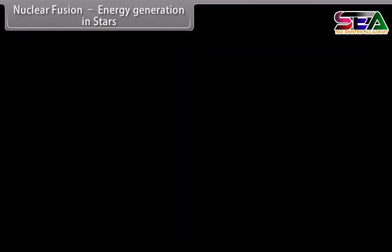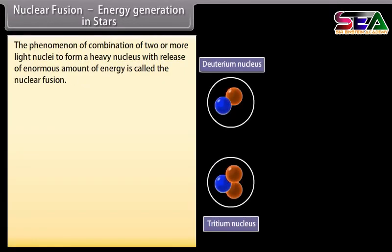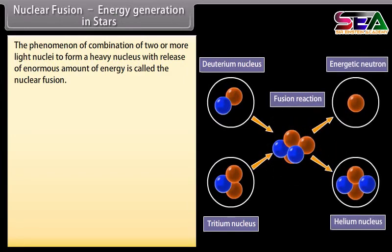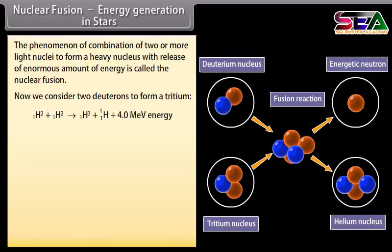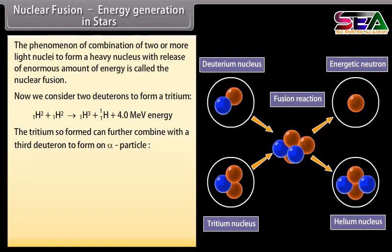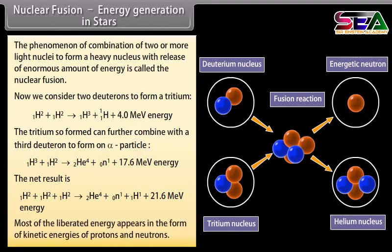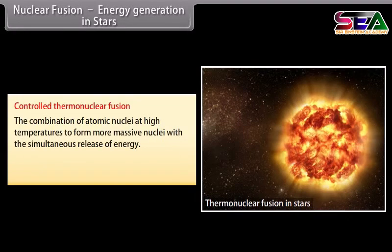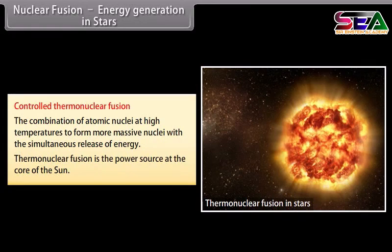Nuclear fusion — energy generation in stars: The combination of two or more light nuclei to form a heavy nucleus with release of enormous energy is called nuclear fusion. Two deuterons can form tritium, which can further combine with a third deuteron to form an alpha particle. Most of the liberated energy appears as kinetic energies of protons and neutrons. Controlled thermonuclear fusion — the combination of atomic nuclei at high temperatures — is the power source at the core of the sun.